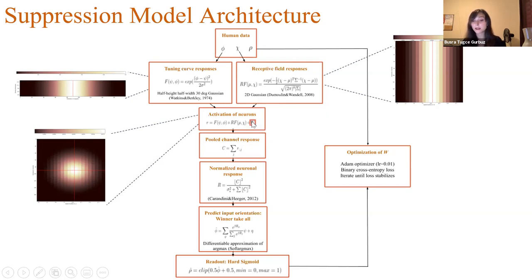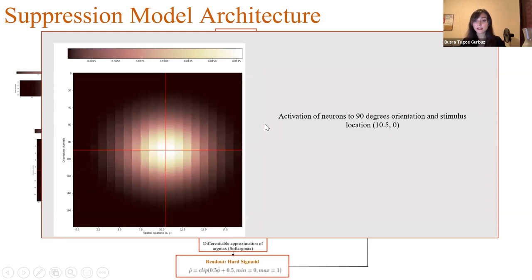And then we calculated activation of neurons by just multiplying this tuning curve response and receptive field response element-wise. And as you see, we also multiplied these with a factor W, which is the value that these tuning curves will be suppressed. This is highlighted here because we will find this value of W through optimization by using human data. So X-axis showing only the central row, X locations, and Y-axis shows the orientation channels. And we are showing 90-degree stimulus at 10.5 X location.